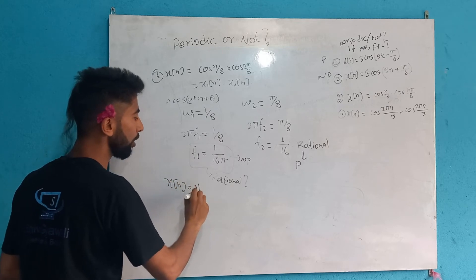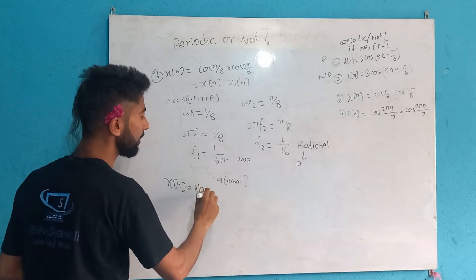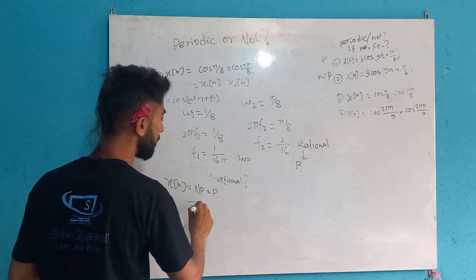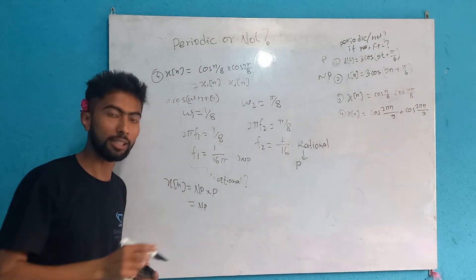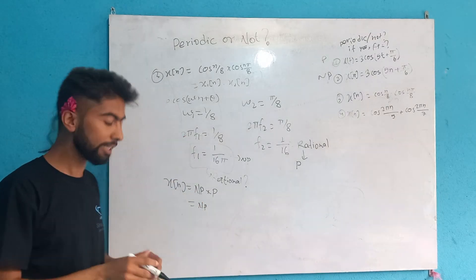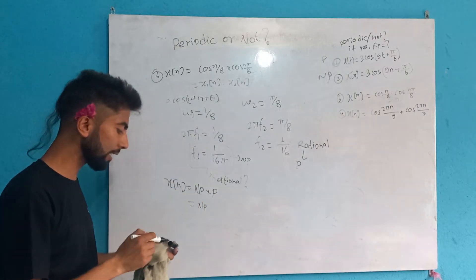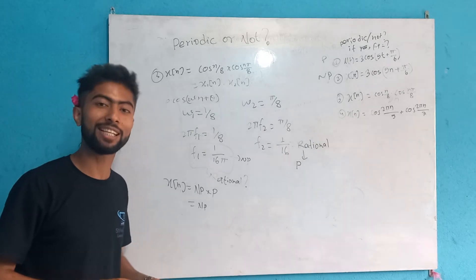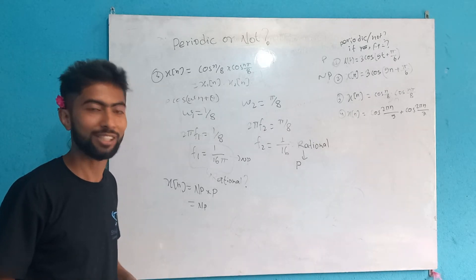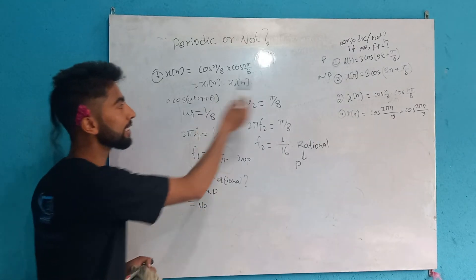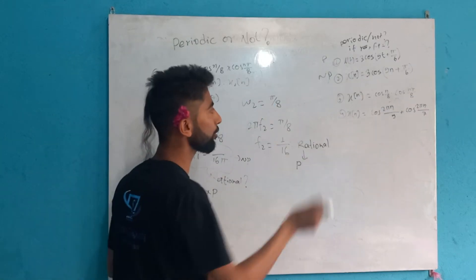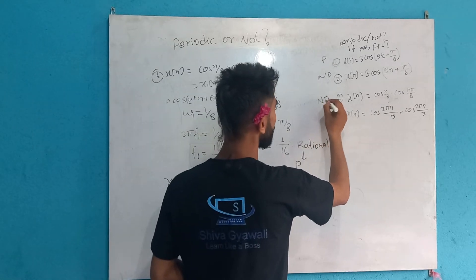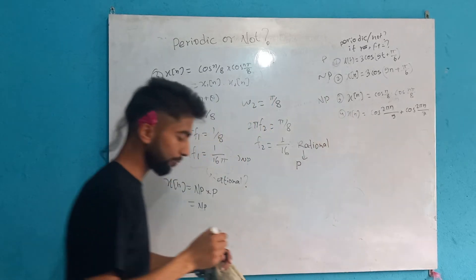Non-periodic multiplied by periodic results in non-periodic. So this product signal is also non-periodic. If there is no period, the period is considered infinity.